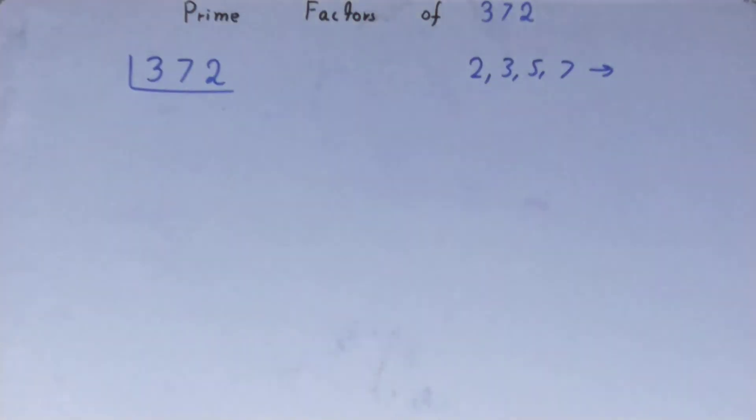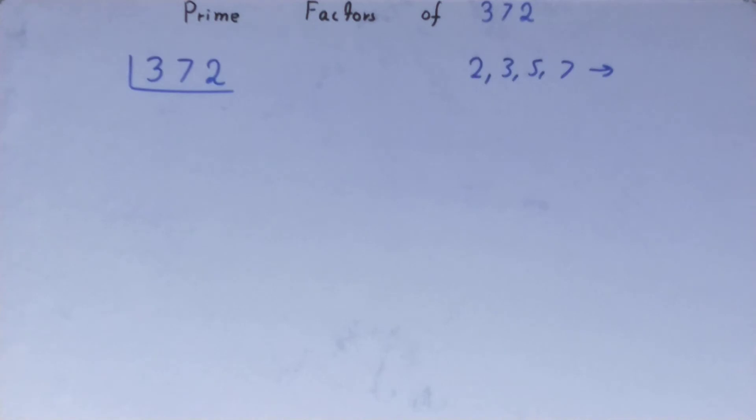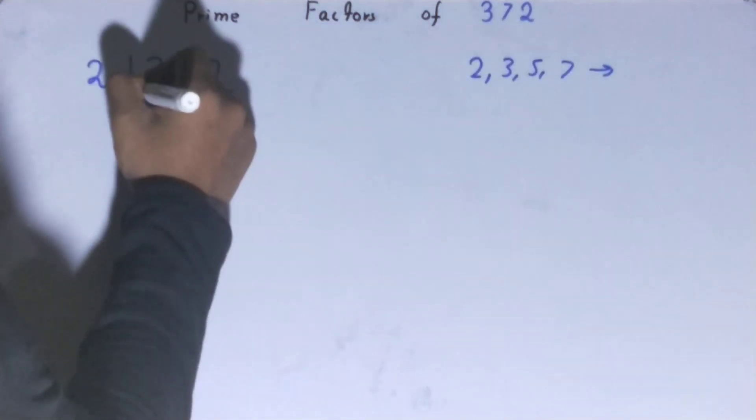So what we'll do, we'll start with the lowest prime number we have, that is 2. Is the number 372 divisible by 2? Clearly it is because it is an even number, so divide it. And you'll be left with 186.